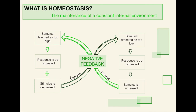As you can see here, if we start in the top left, a stimulus is detected as being too high. So, this could be something like you've just eaten a very sugary meal and your blood glucose concentration is very high. Your body recognises this, a response is coordinated, and the stimulus is decreased. We will get into more depth about how blood glucose concentration is decreased later on in the video.